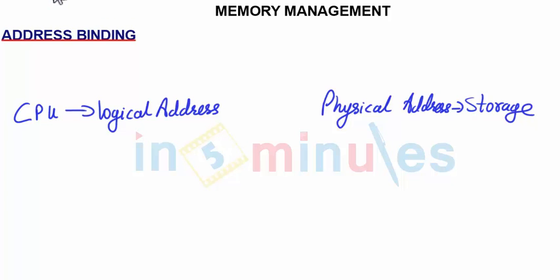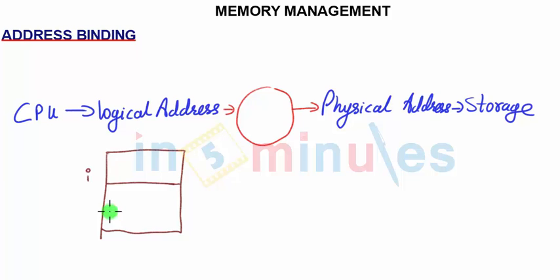Binding process, as we have already said, is the process to convert this logical address to this physical address. For instance, if we try to understand this, consider in a program we are talking about instruction I to I plus K to be loaded. So if we talk about line by line instruction, this would be I plus one, this would be I plus two and so on. But we need to understand this is the logical address which we are talking about.